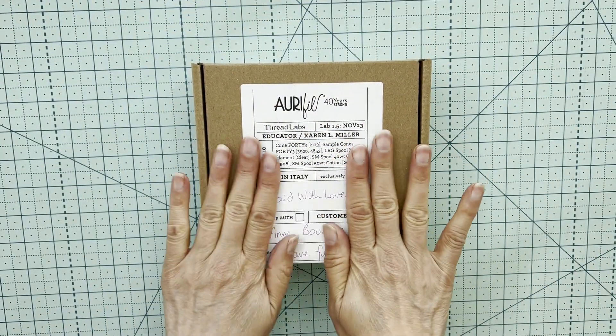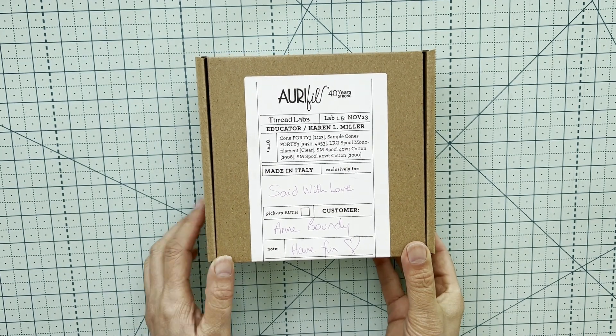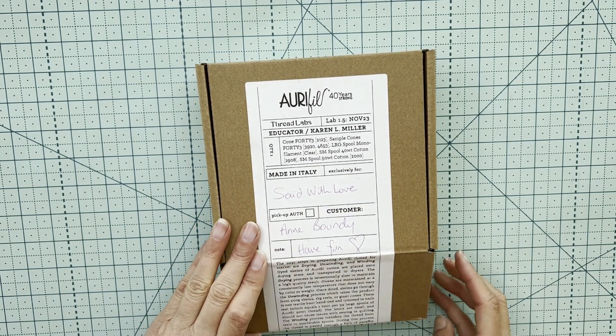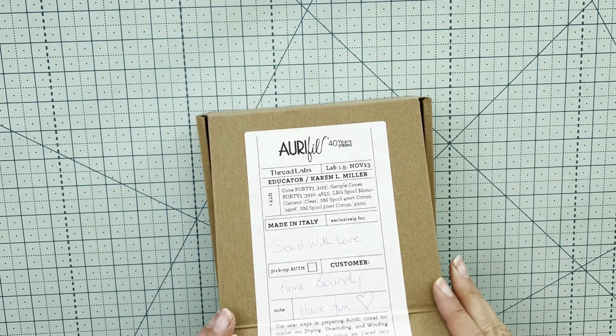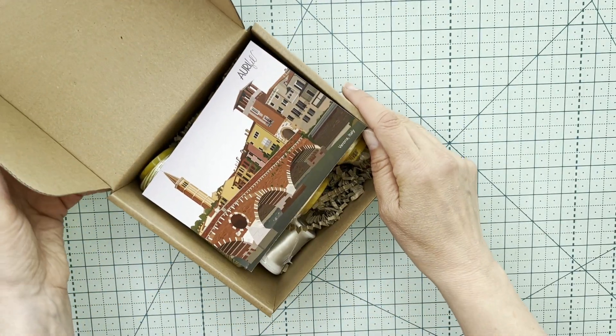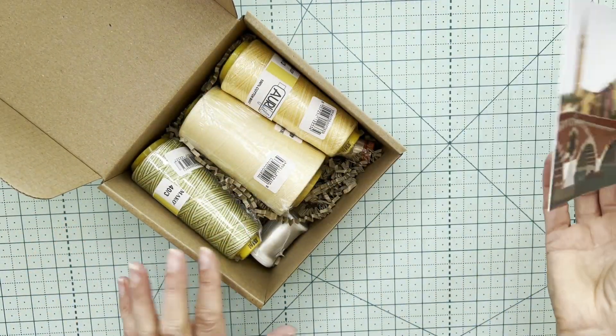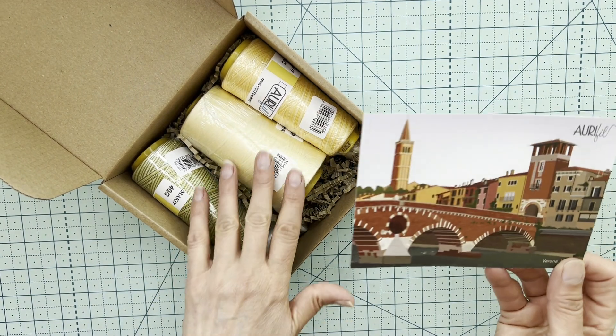Let's have a look what's in this month's thread box. This is Thread Labs 1.5. Oh my goodness. We've got some cones.